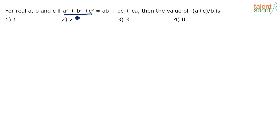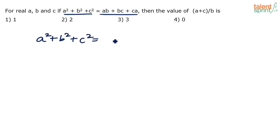What is given to us: A squared plus B squared plus C squared equals AB plus BC plus CA. A squared plus B squared plus C squared equals AB plus BC plus CA. This is the only condition given to us in the question.